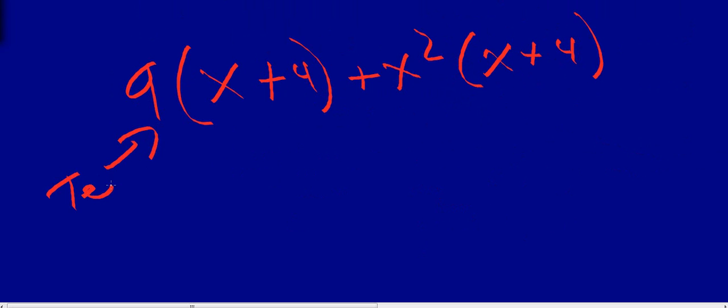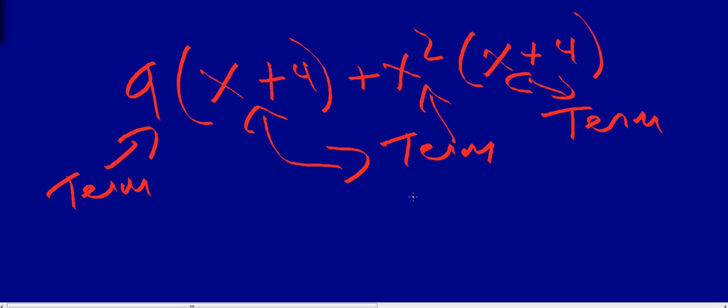Last little tidbit here, and we'll call this one quits. We've got 9 times x plus 4 plus x squared times x plus 4. Each of these terms, that's a term, right? That's a term, right? Term. These are all terms, right? So each term, it's its own individual number.